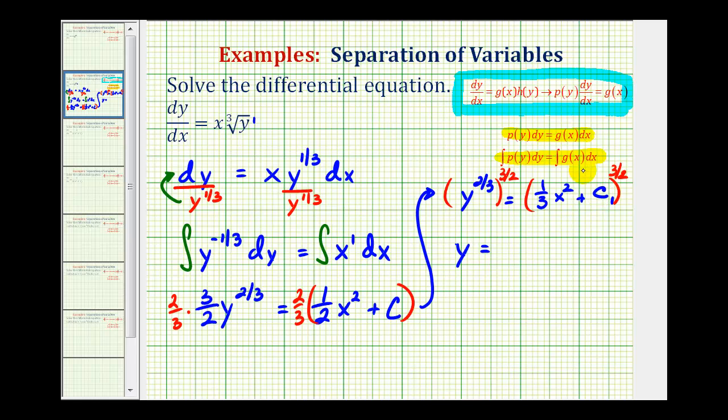Now this would be plus or minus, and then we'll have one-third x squared plus c sub one, raised to the three-halves power.